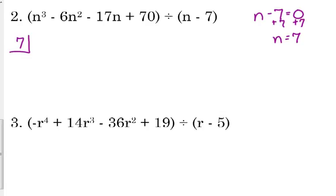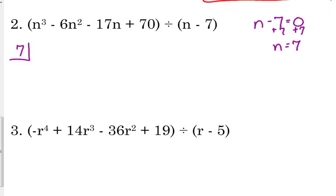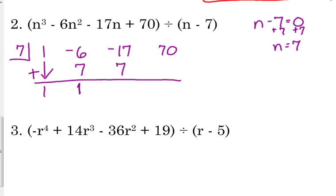It's a cubic. So, we should have cube squared, not squared, and a constant. And we do. So, list our coefficients. 1, negative 6, negative 17, and 70. Leave your space. Draw your line. Bring down the first constant. Bring down the 1. Multiply by the number on the shelf. 1 times 7 is 7. Add. Negative 6 plus 7, positive 1. Multiply by 7. Put it in the next open spot. Add. Negative 17 plus 7, negative 10. Multiply by the number on the shelf. Negative 70. Add. We get 0.